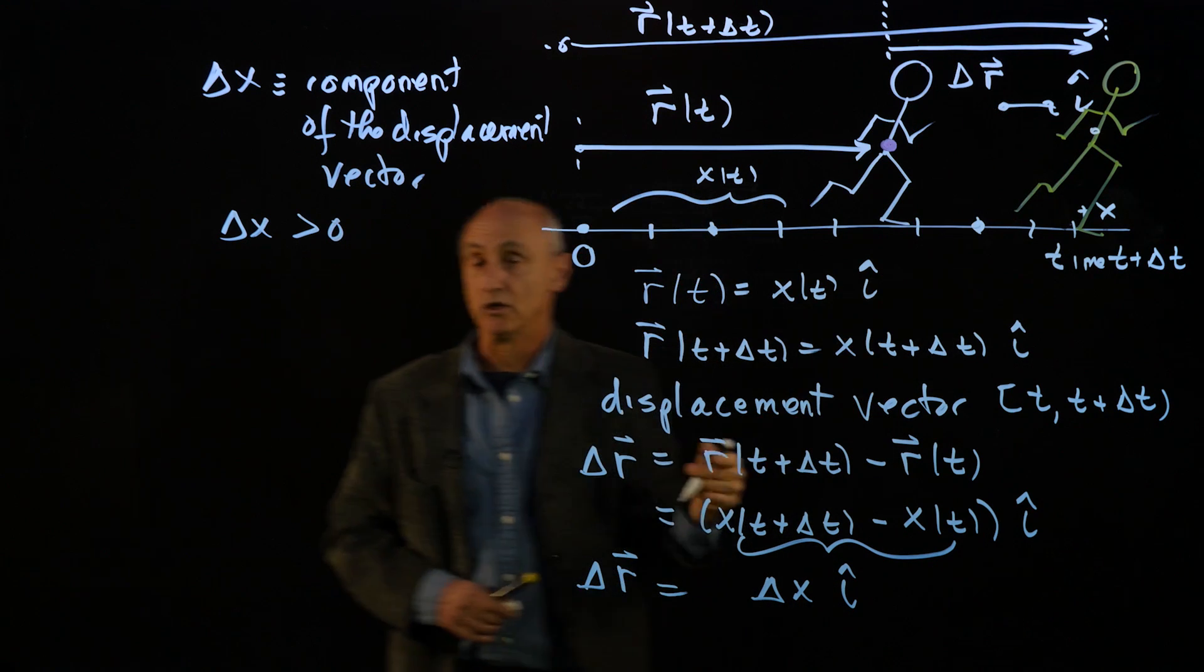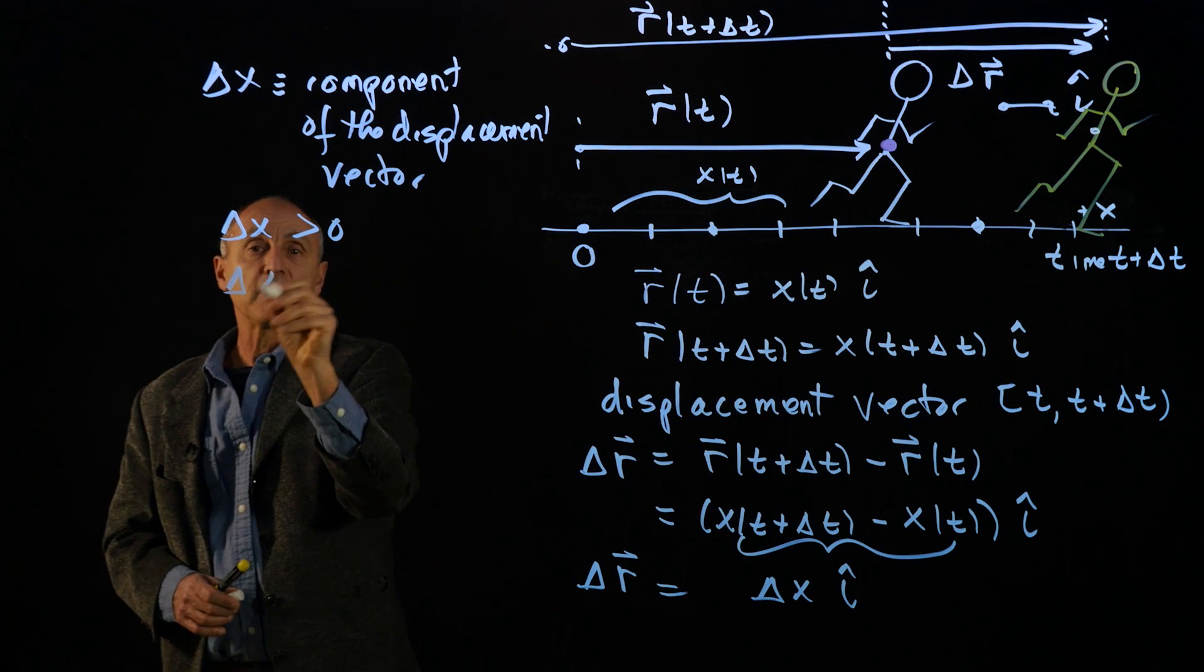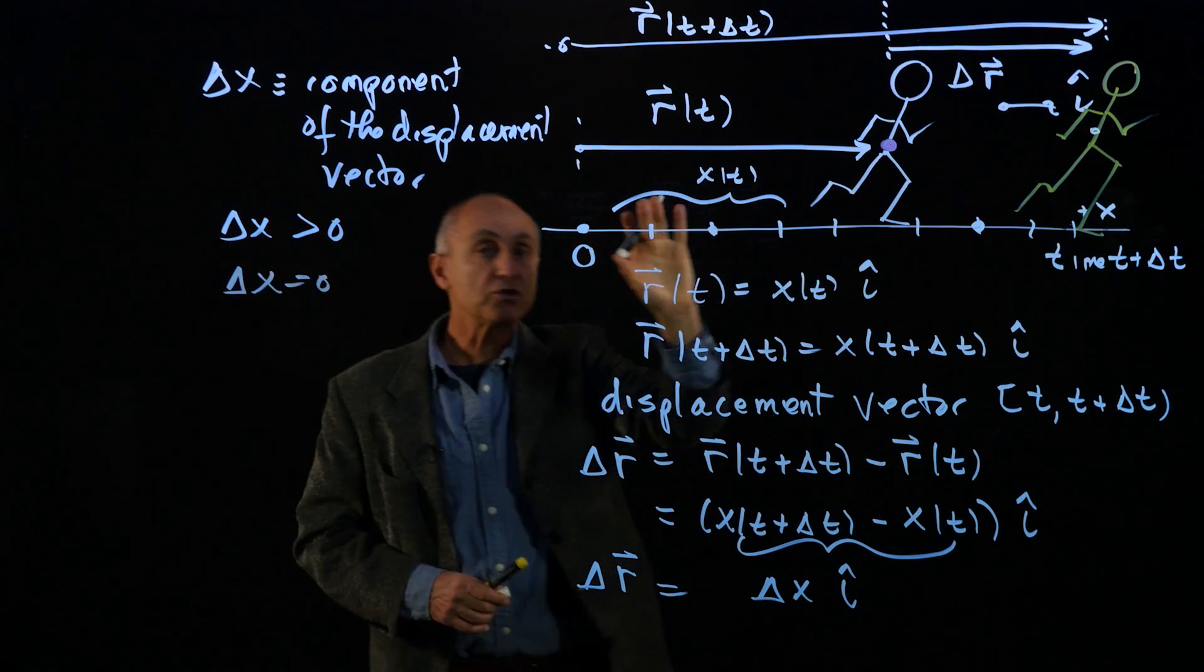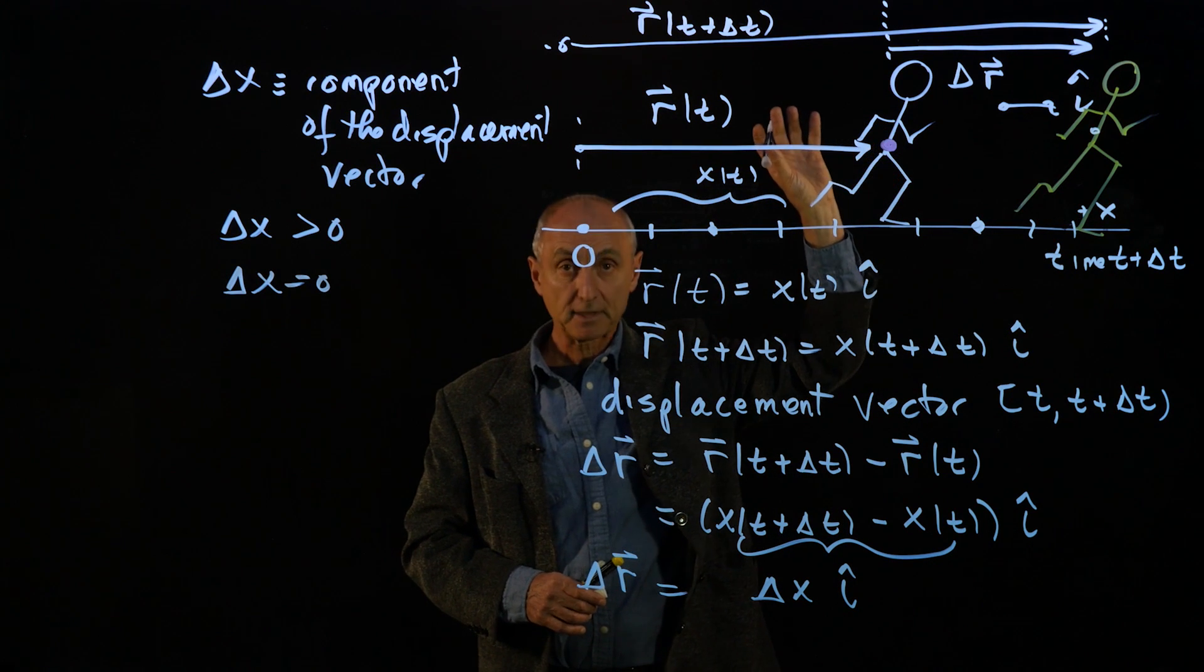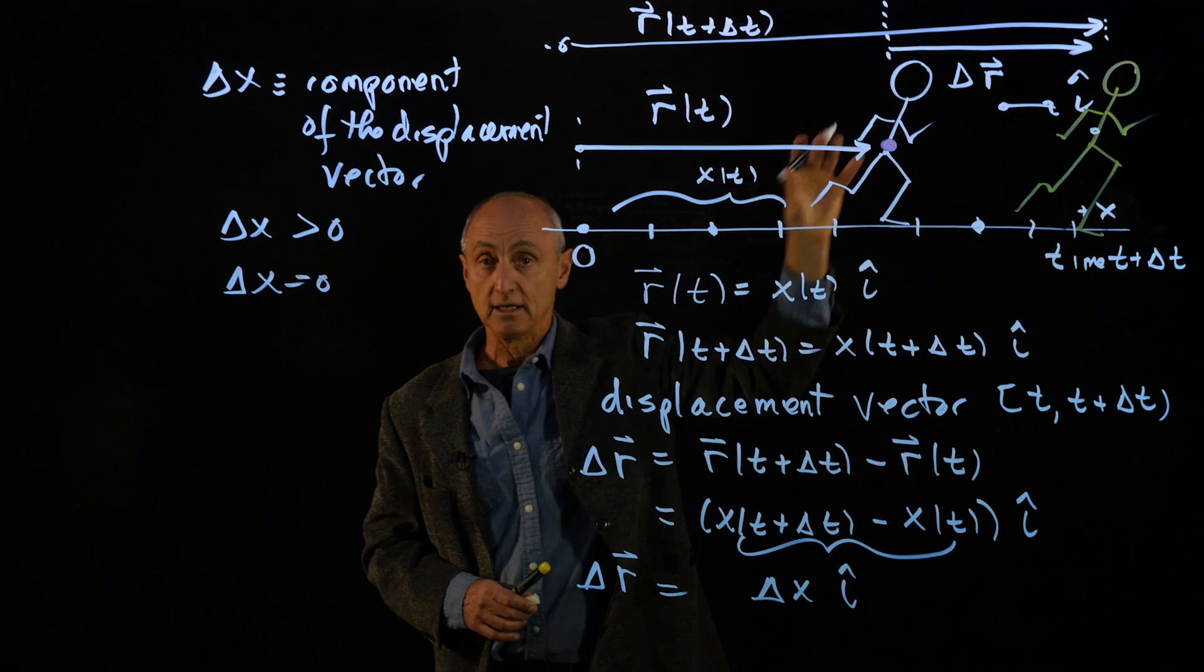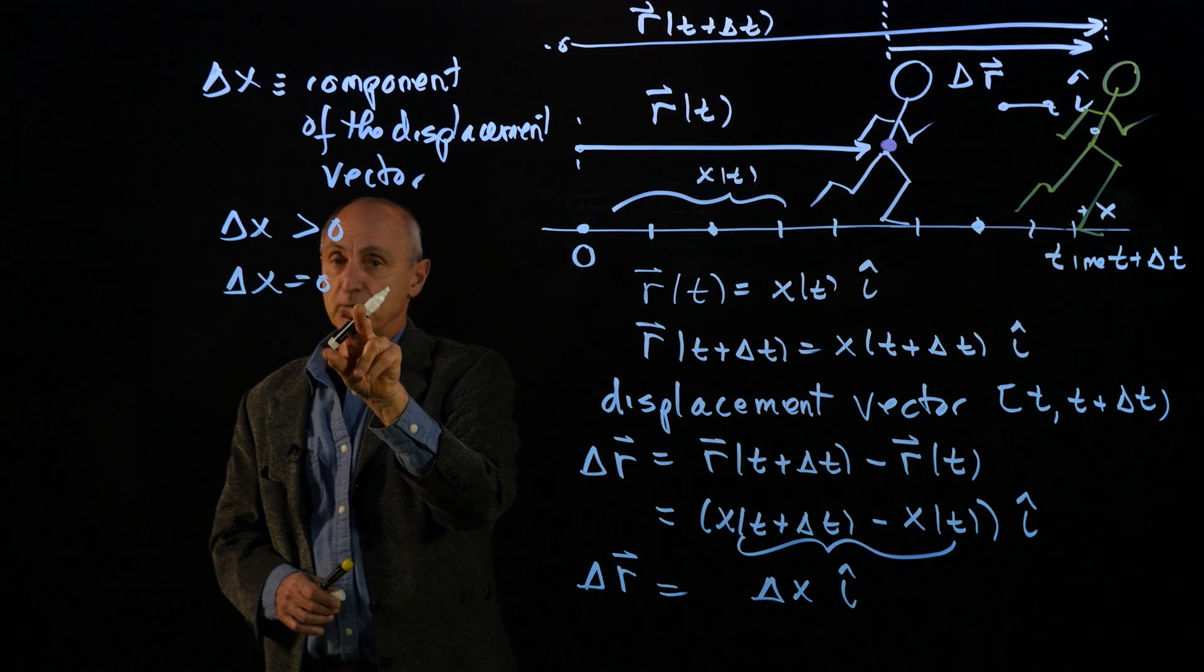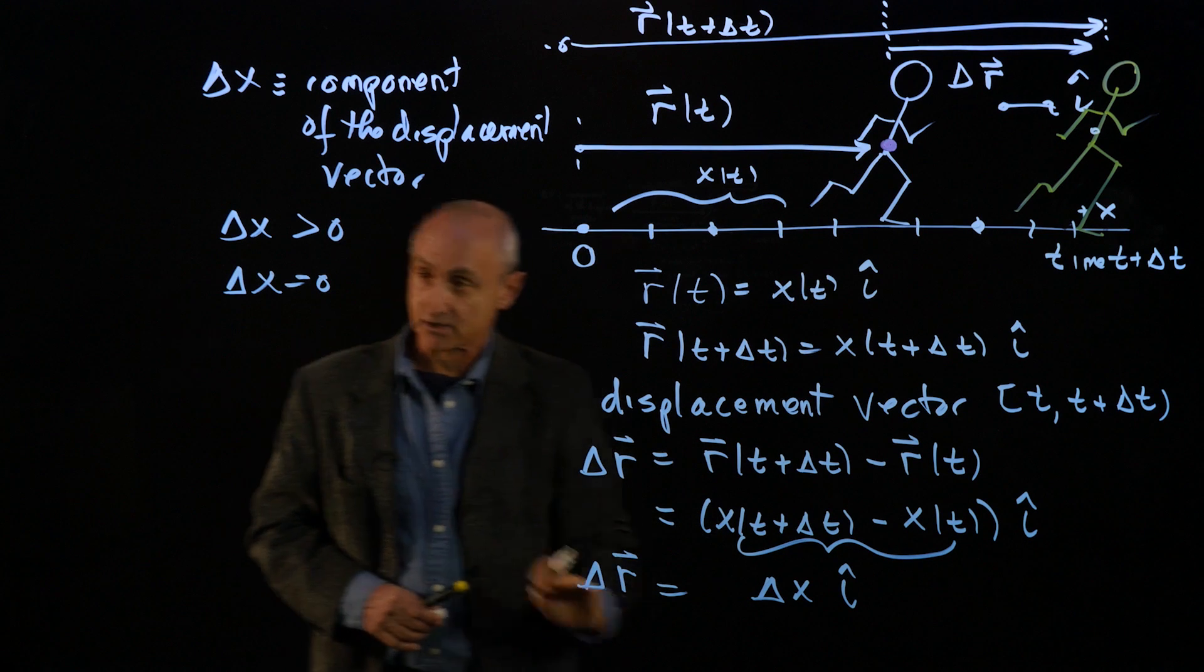If the displacement vector is zero, the person could have run forward and come back, and at time t plus delta t be in exactly the same spot as time t. The displacement vector is zero in that case.